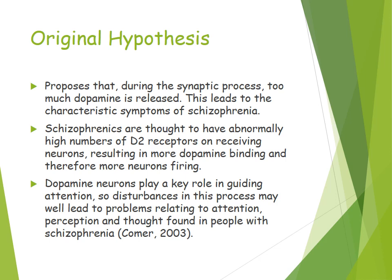Dopamine neurons play a key role in guiding attention. Disturbances in this process may lead to problems relating to attention and perception, which is thought to be found in individuals with schizophrenia. Therefore, this leads to those symptoms surrounding issues with perception and attention, such as delusions and hallucinations.